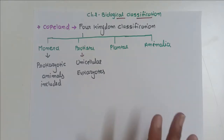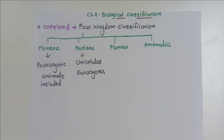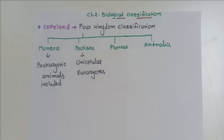Plantae has autotrophic plants and Animalia has heterotrophs. This was the first time that prokaryotes and eukaryotes were separated. In the previous three-kingdom classification by Haeckel, the limitation was that prokaryotes and eukaryotes were not differentiated. Copland attempted to fix this by differentiating into prokaryotes and eukaryotes — including a new kingdom Monera for prokaryotes and Protista for unicellular eukaryotes.